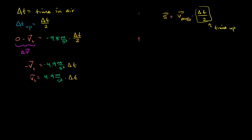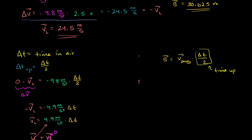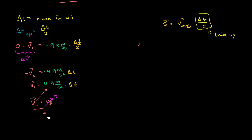What's our average velocity? The average velocity, assuming constant acceleration, is your initial velocity plus your final velocity over 2 — it's really just the mean of the two. We know our initial velocity is 4.9 meters per second squared times delta t. Our final velocity, remember we're just talking about the first half of the time the ball's in the air, so our final velocity is 0 — when it gets to the peak point. So our average velocity is just going to be 4.9 meters per second squared times delta t, all over 2.